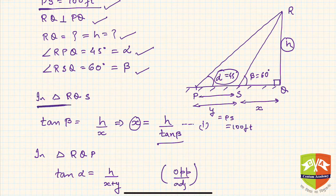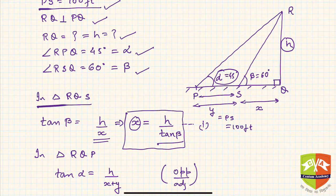If you see in triangle RQS, that is a right angle triangle at Q, tan β is given by h upon x. That is opposite by adjacent. Hence, after rearranging, you can write x = h / tan β, and this is equation number one.